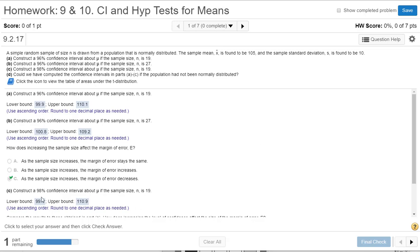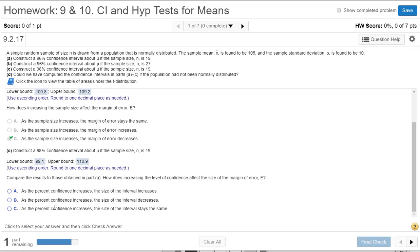So what happened when we increased our interval? Look at each of the upper and lower bounds. It got larger, right? 110.9 is a little bit larger than 110.1. 99.1 is a little lower than 99.9. So if the percent of confidence increases, the size of the interval also increases.